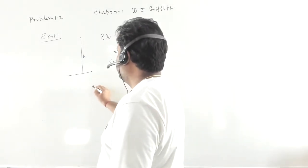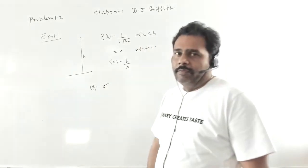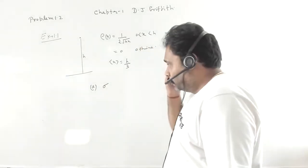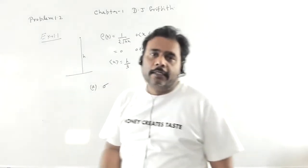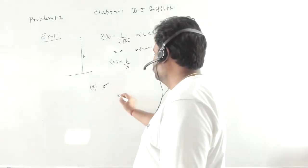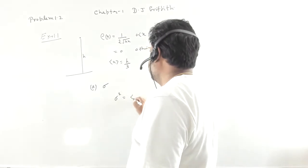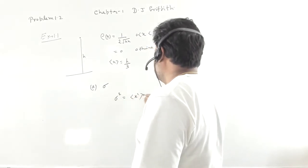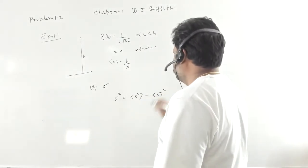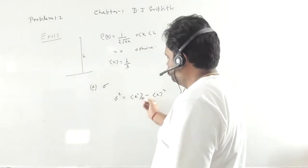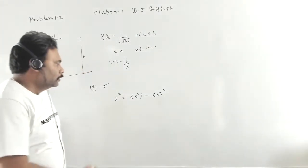In problem 1.2, part (a), we have to calculate the standard deviation σ. Before finding σ, we need to calculate the variance. The variance is σ² = ⟨x²⟩ − ⟨x⟩², so we need to calculate the expectation value of x².